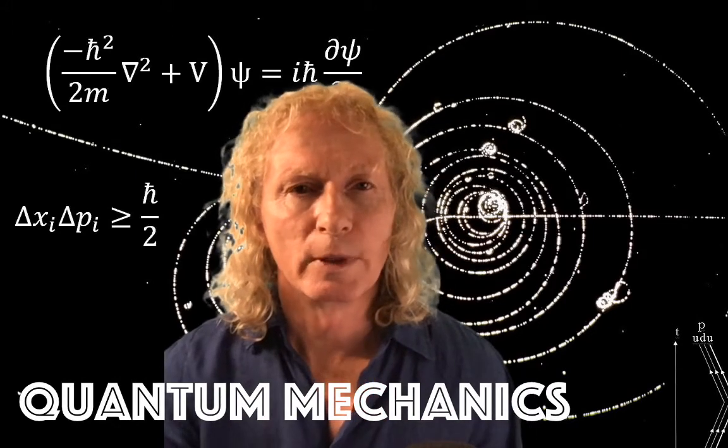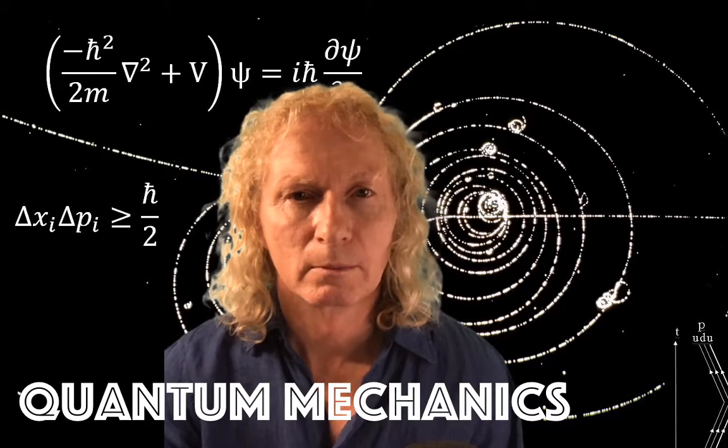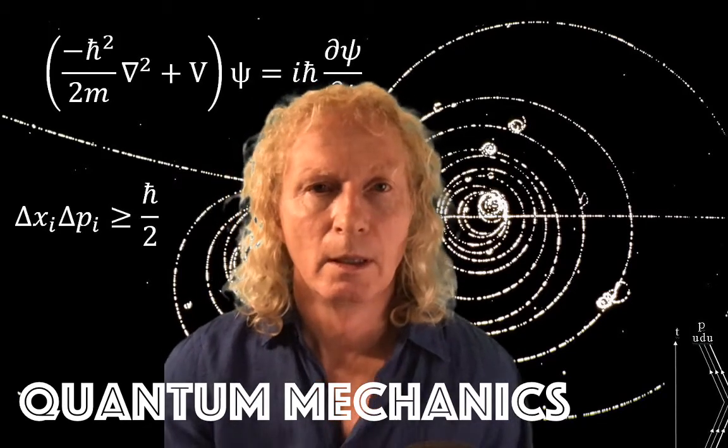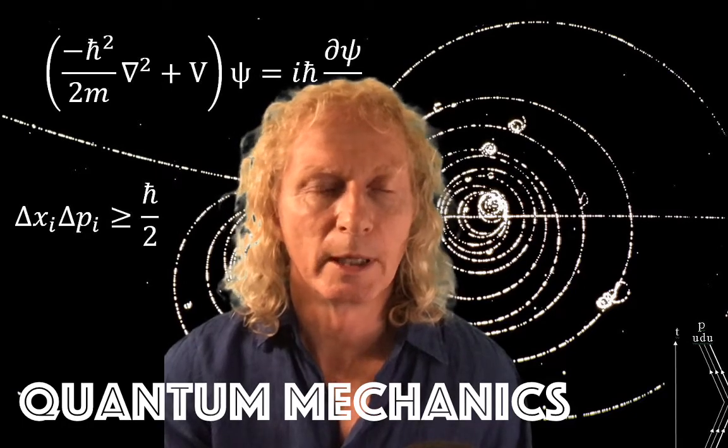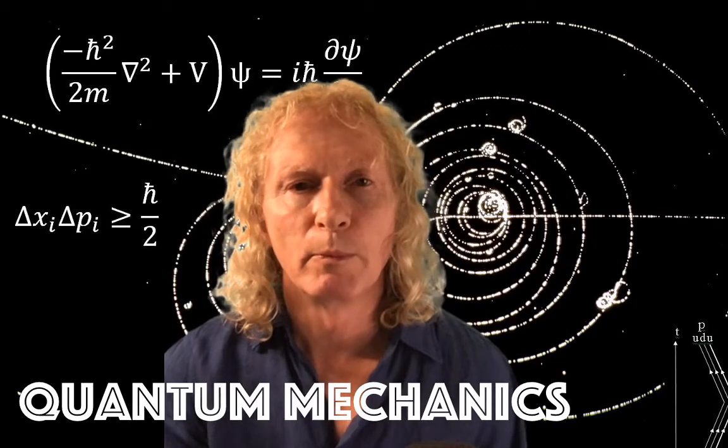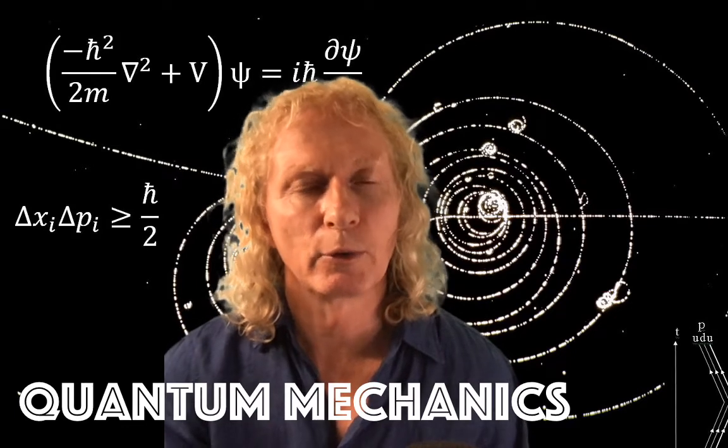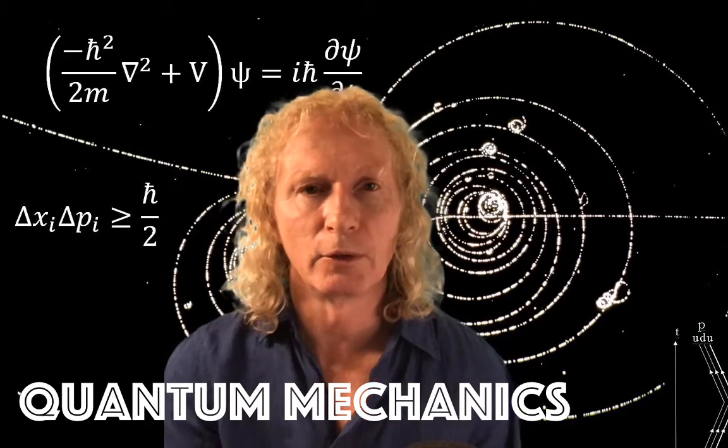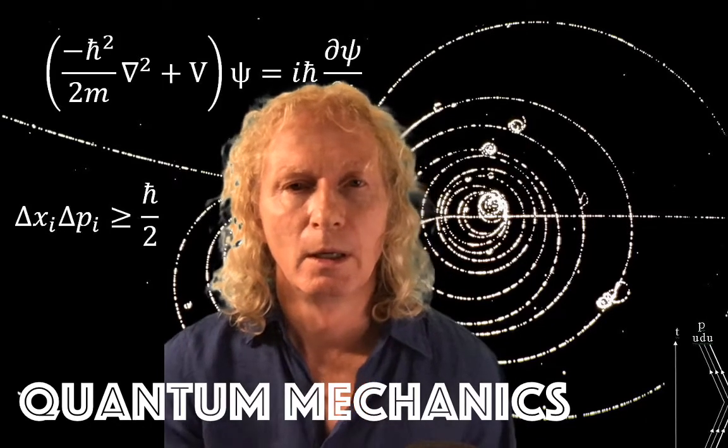Today we're going to revisit the square well and derive many of the properties that we've already determined from being able to solve for the explicit solutions of the square well, but from the structure of the Schrödinger equation itself without having to solve for the explicit solutions.